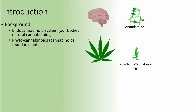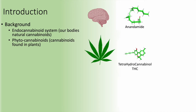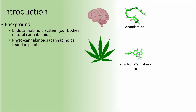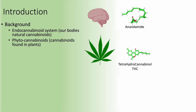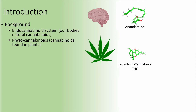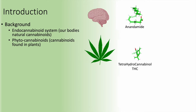Second, there are molecules produced by plants that mimic endocannabinoids in your body and can interact with the endocannabinoid system. These plant-based cannabinoids are called phytocannabinoids. The most well-studied phytocannabinoid is tetrahydrocannabinol, which comes from a marijuana plant.